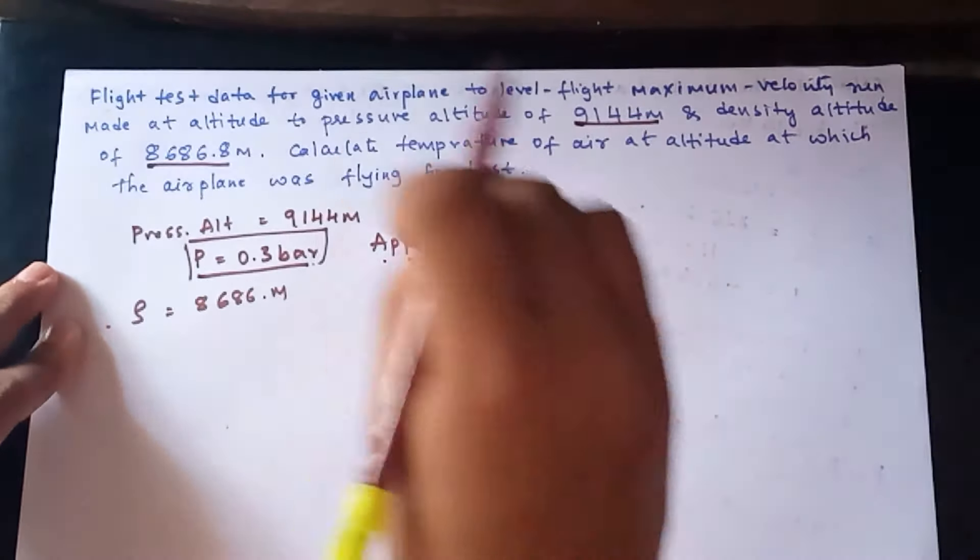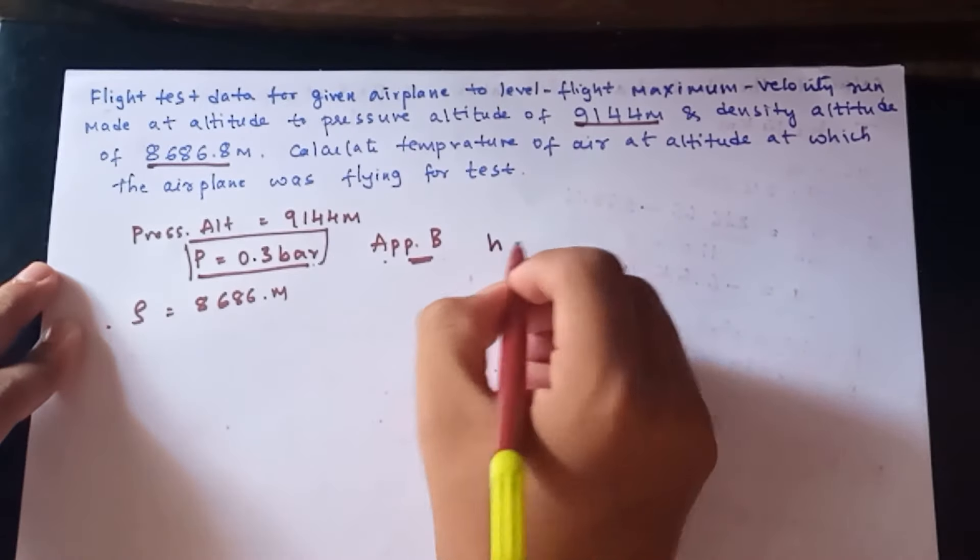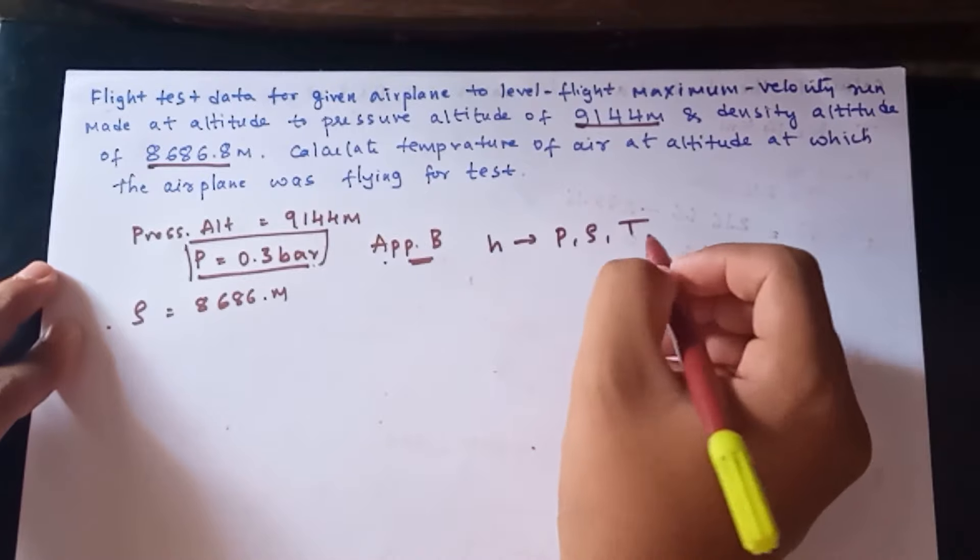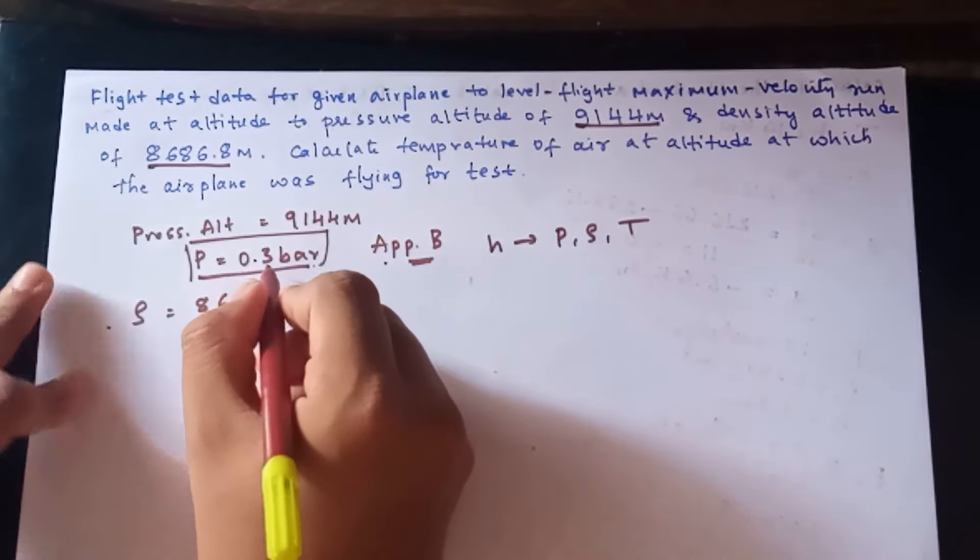Appendix B and Appendix C. For a given height, it indicates what the pressure, density and temperature are. I took 0.3 bar from there.